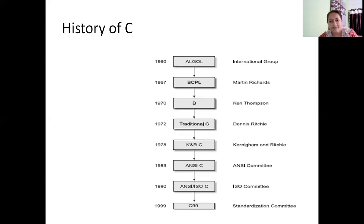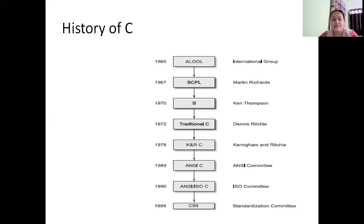This modified and standardized version of C language was called ANSI C. In 1990, the International Standards Organization, ISO, also standardized C language further. Standardization guarantees the quality of a product, so it became a standard product and added more value to the language.